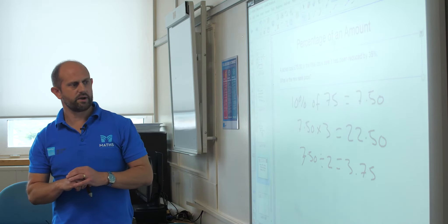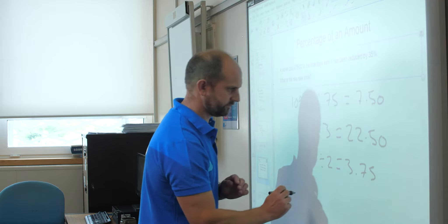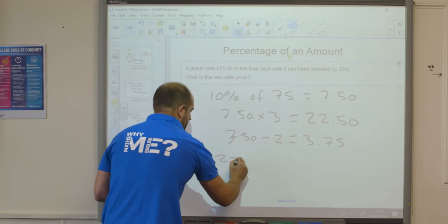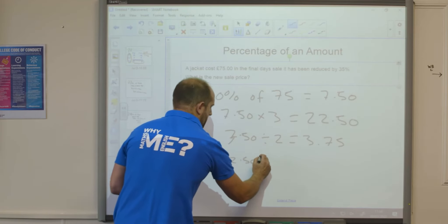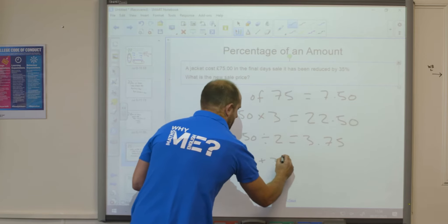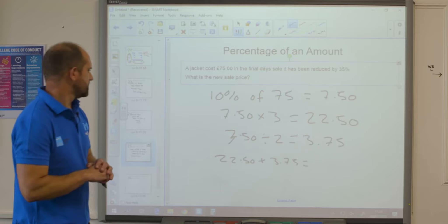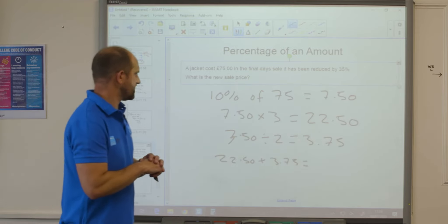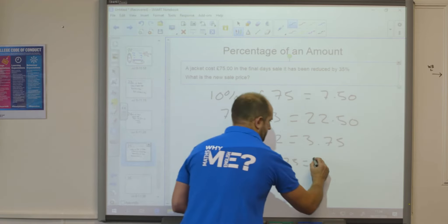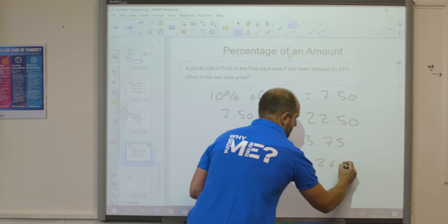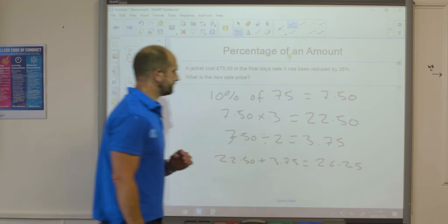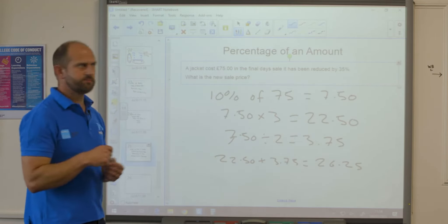So now all I need to do is add these two together. So I've got 22 pounds 50 plus 3 pounds 75 equals 26 pounds 25.